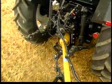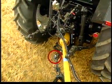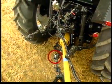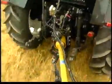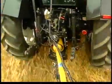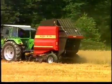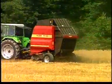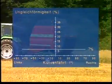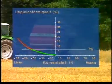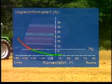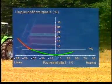Even slight attaching errors, such as an excessively long drawbar, have only little influence on the drive. Slightly limited cornering is still possible with the PTO shaft switched on.